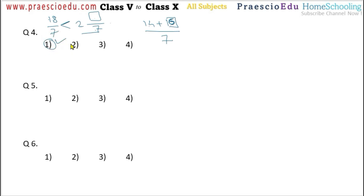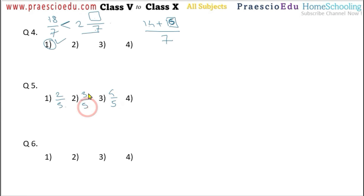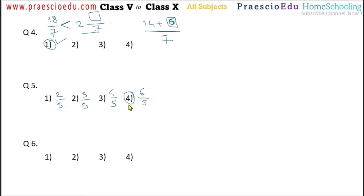Question number 5: Which of the following is an improper fraction? Options are 2/5, 3/5, and 4/5 — all have the denominator greater than the numerator, so all are proper fractions. Option number 4 is 6/5, where the numerator is greater than the denominator, meaning this is an improper fraction. So option number 4 is the correct one.